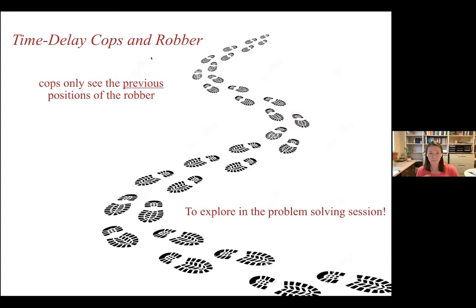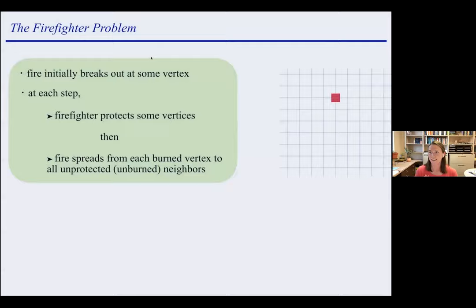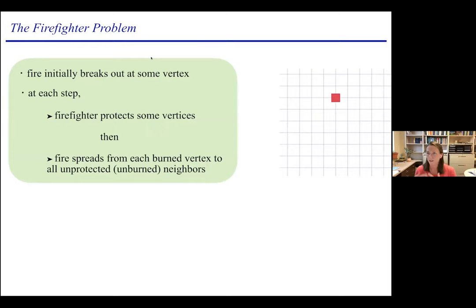Now I want to switch gears and talk about a different kind of graph searching problem: the firefighter problem. Now we have a fire breaking out at a vertex of a graph — you can think of it as fire, gossip, or disease spreading. It's similar in flavor to zero forcing, power domination, and bootstrap percolation. At each time step, a firefighter protects some vertices, creating a firewall through which the fire can't pass — or think of it as inoculating vertices against disease. When it's the fire's turn, it spreads from each burning vertex to all unburned, unprotected neighbors.